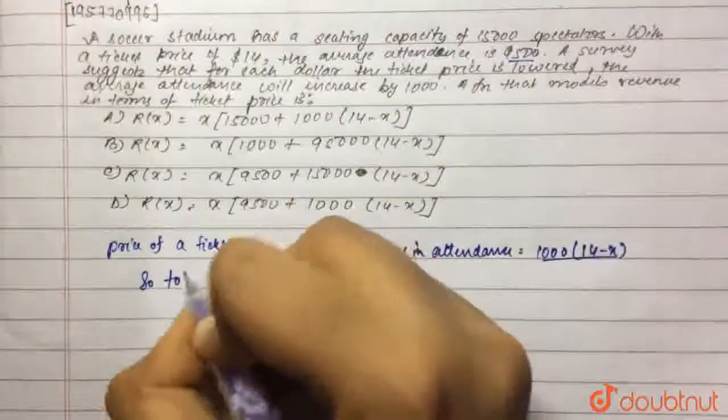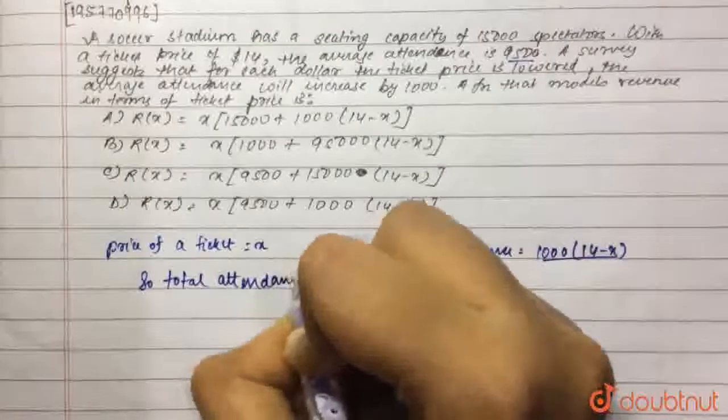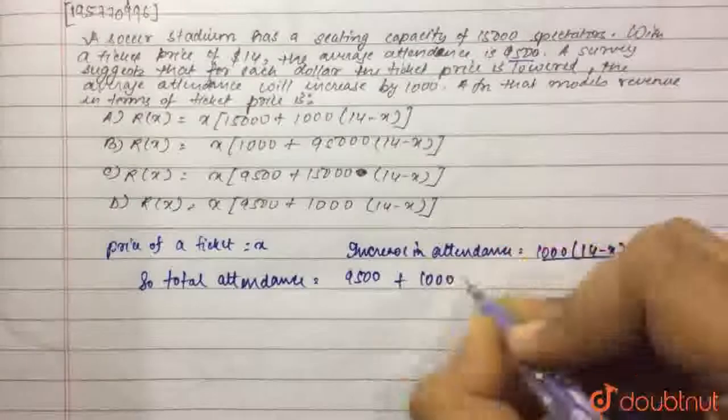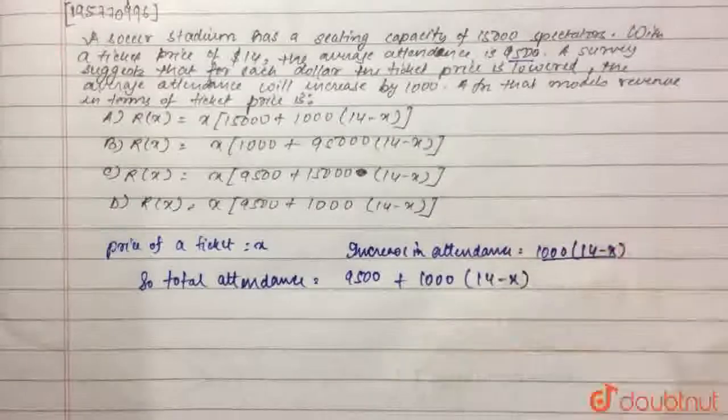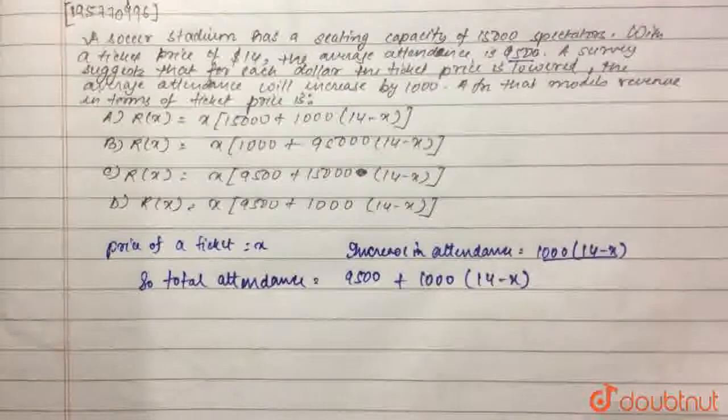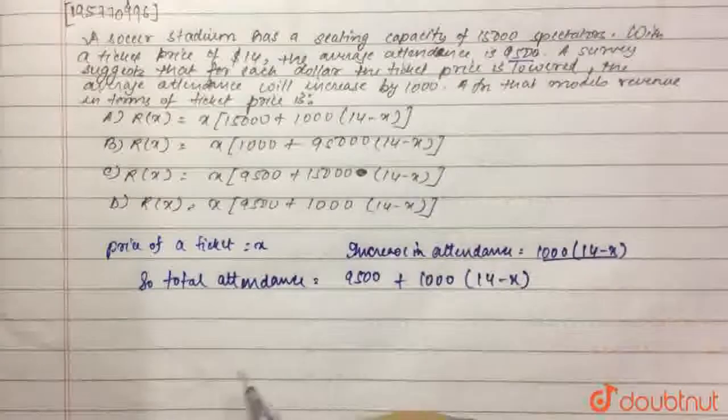So total attendance will be equal to 9,500 plus 1,000 into 14 minus X. Here 14 minus X is the number of dollars by which we have decreased the price of the ticket. So now what will be the revenue?